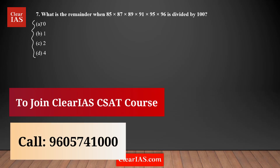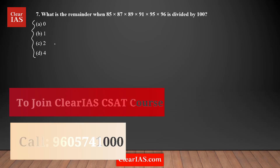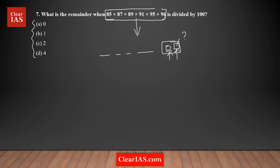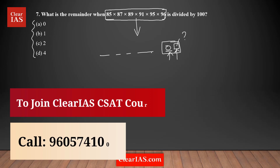All the answer choices are single-digit numbers. That means dividing this product by 100 gives a single-digit remainder, so we can confirm the second-last digit of the entire product is zero. Therefore the question is essentially asking you to find the unit digit of this product.